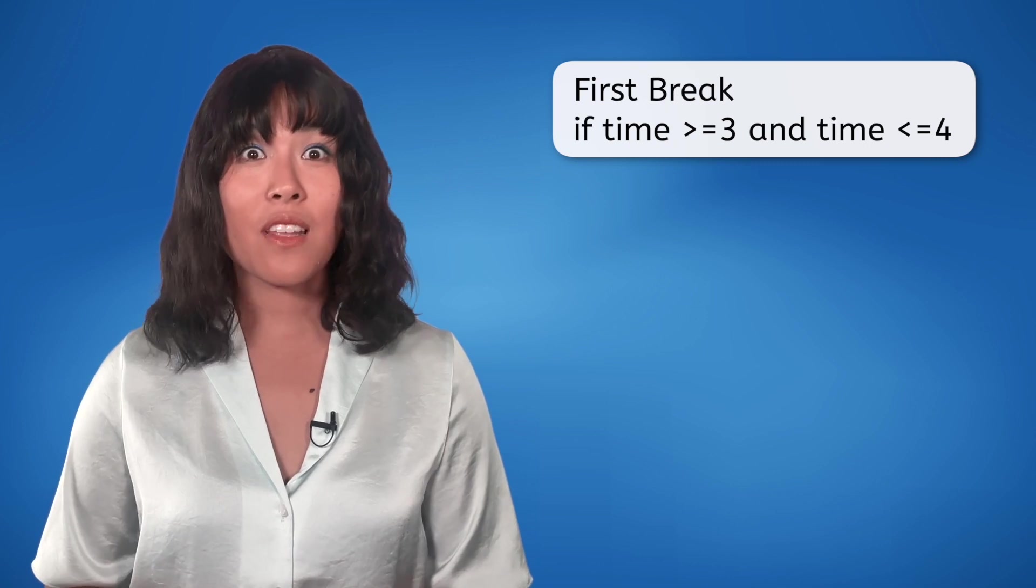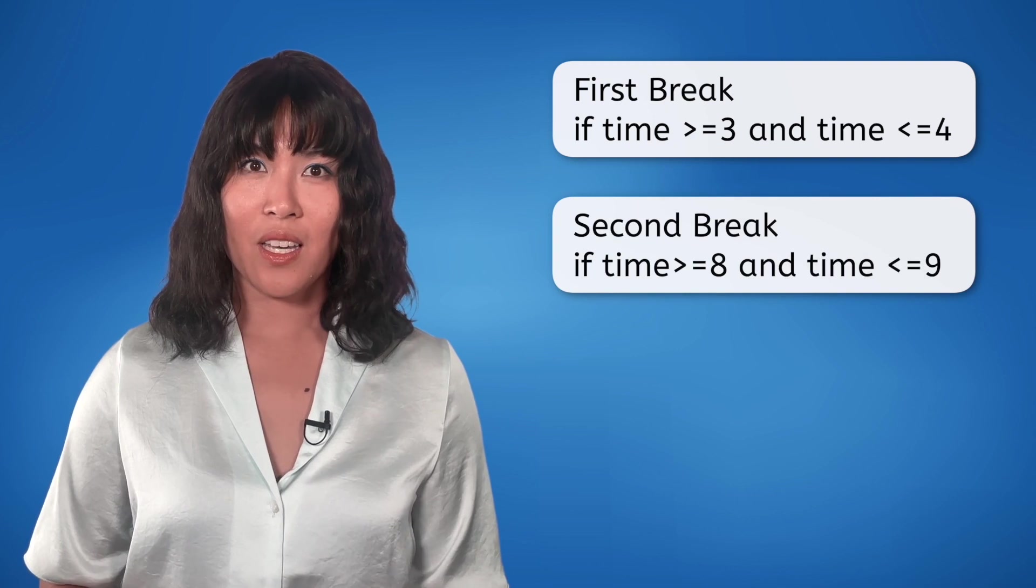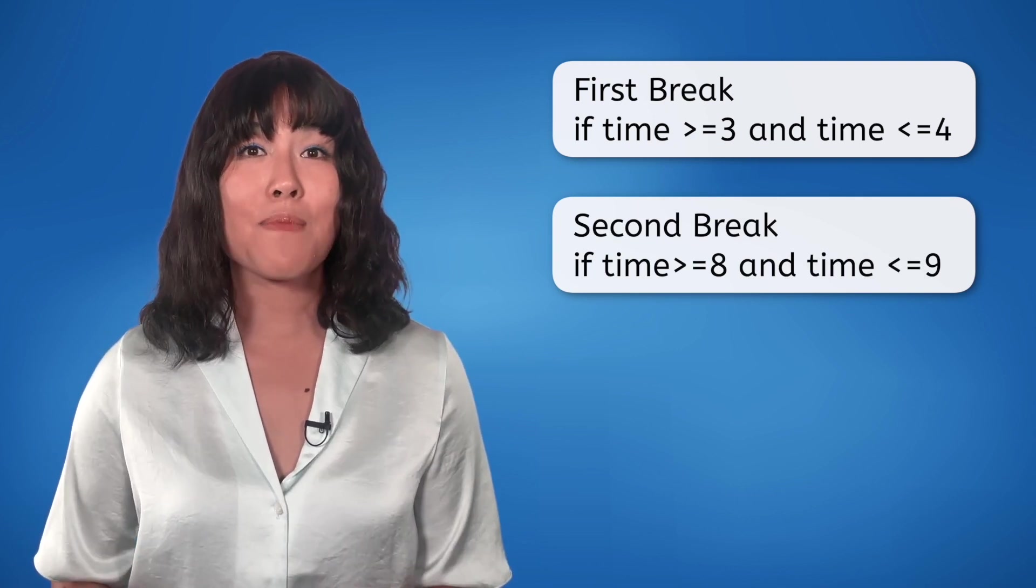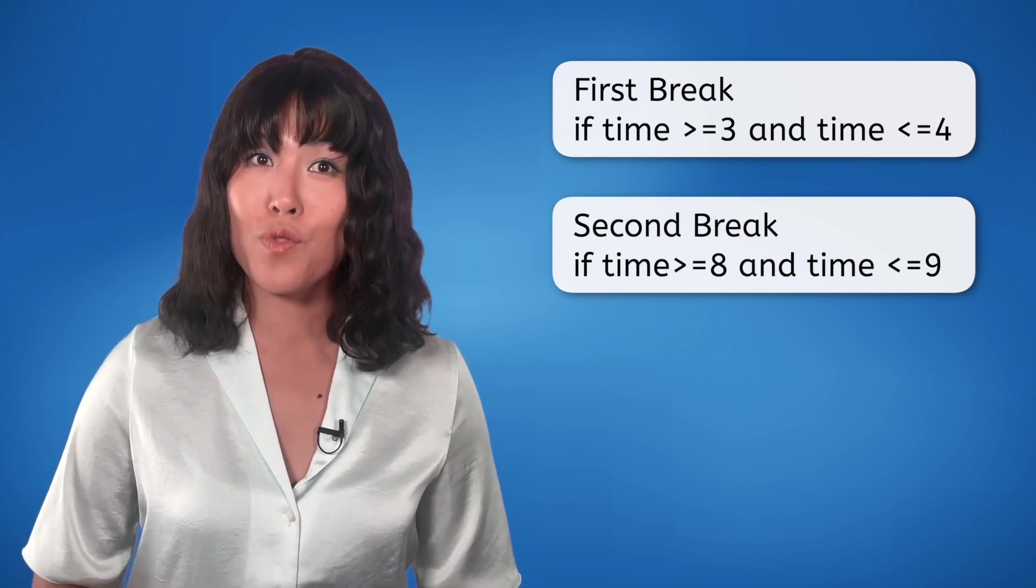But we also have another range of times I am on break. My second break is from 8 o'clock to 9 o'clock. We can write this condition as IF time is greater than or equal to 8 and time is less than or equal to 9.